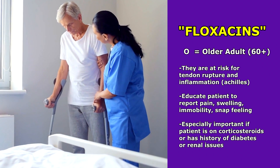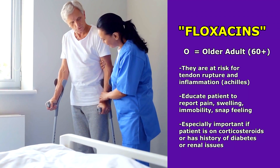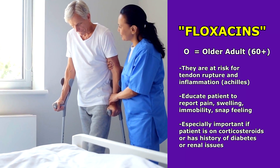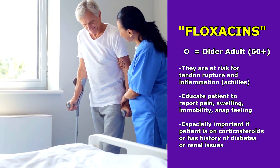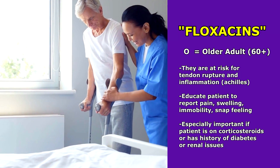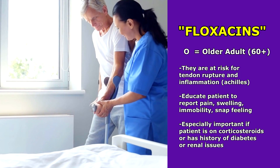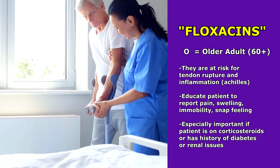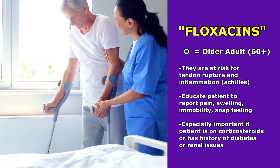O is for older adults — those 60 or older are at risk for tendon inflammation and rupture, especially involving the Achilles tendon. Educate the patient to immediately report any pain, swelling, a snapping feeling, or immobility around a tendon. This risk is especially increased if the patient is also taking corticosteroids or has a history of diabetes or renal issues.